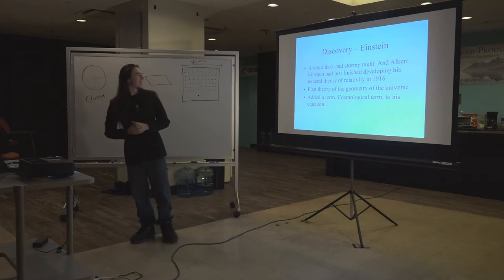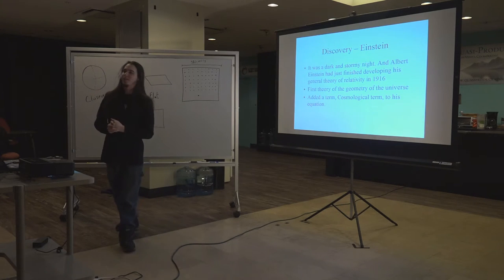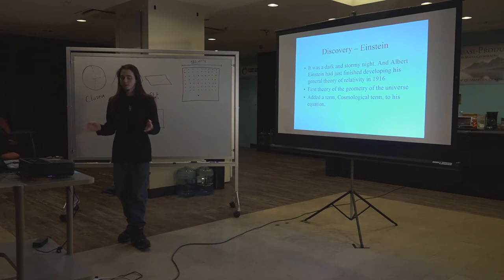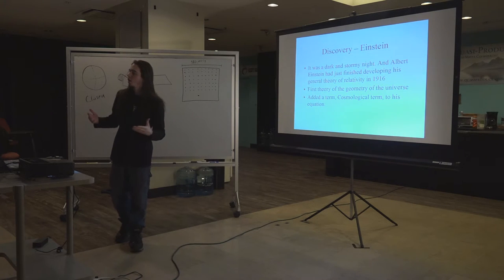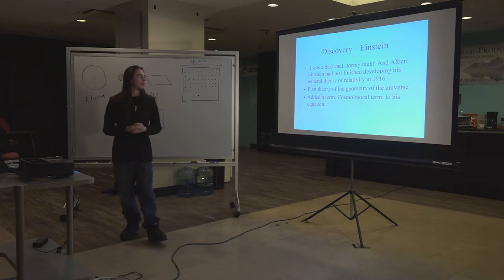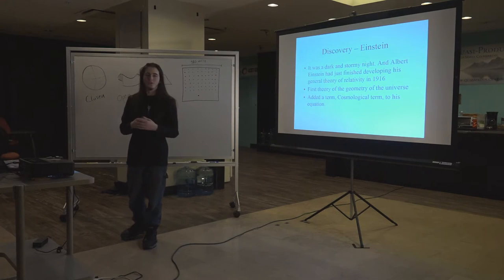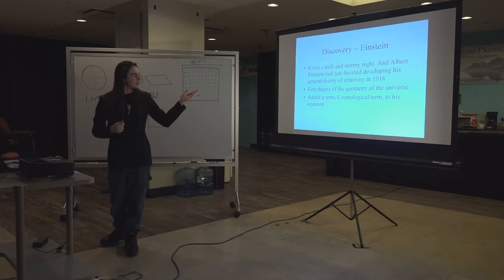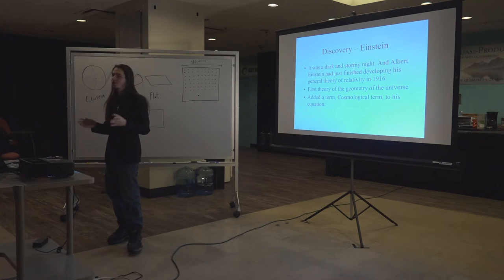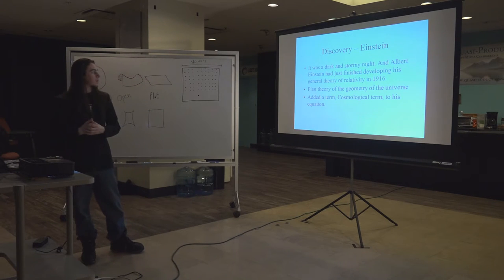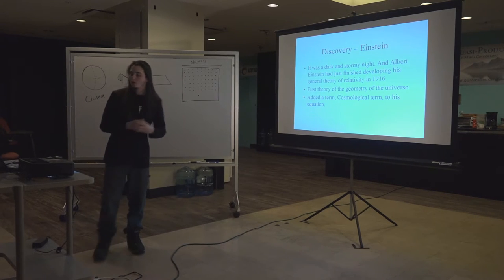All right. So, it was a dark and stormy night. And Albert Einstein had just finished developing his general theory of relativity in 1916. But there was a problem. His theory described a universe we didn't live in. His theory described a universe that was moving. And at the time, in 1916, it was common knowledge to think that the universe was static. So, his math didn't really go with observation at the time, which used to bother physicists. And so, the part about this theory is that it was the first theory of the geometry of the universe.